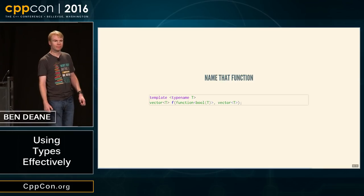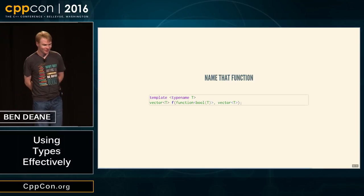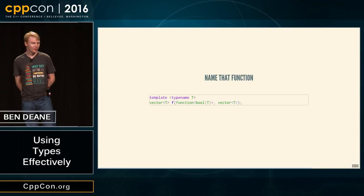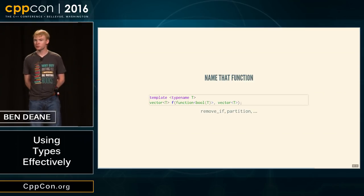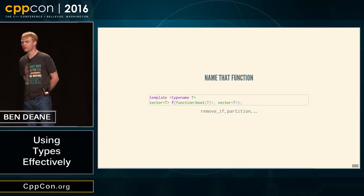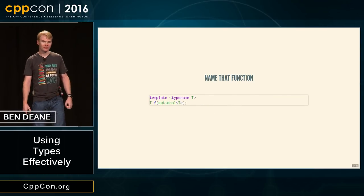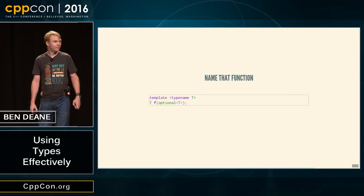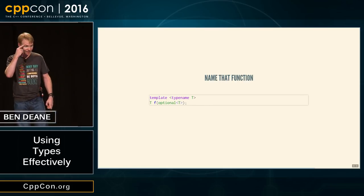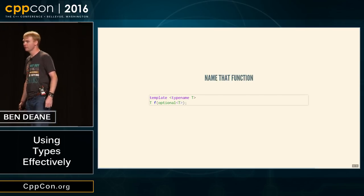How about f(function<bool(T)>, vector<T>) returning vector<T>? The functional programmer says 'filter'; in C++ it could be remove_if or partition — it takes a predicate and a vector, and returns a vector of the same type. How about f(optional<T>) returning T? It's not total — what would you return if you had null_opt? That's not possible by the types alone.